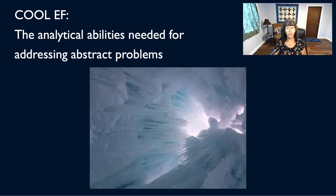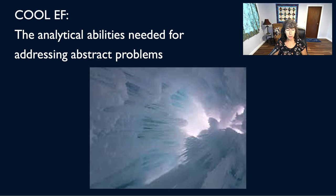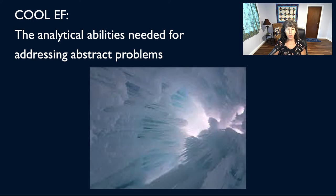We have two different classifications of executive functioning. The first is cool EF — the analytical abilities needed for addressing abstract problems. It's often used when decisions don't have personal reward, personal stakes, or an emotional component associated with them, such as remembering a series of digits or a string of words, like things that might be on a standardized assessment.